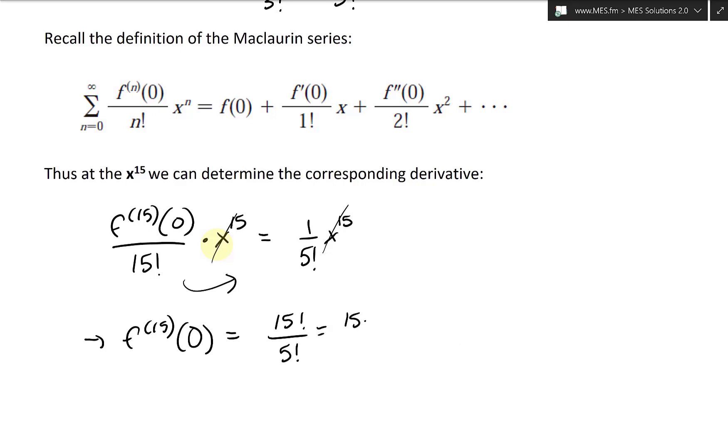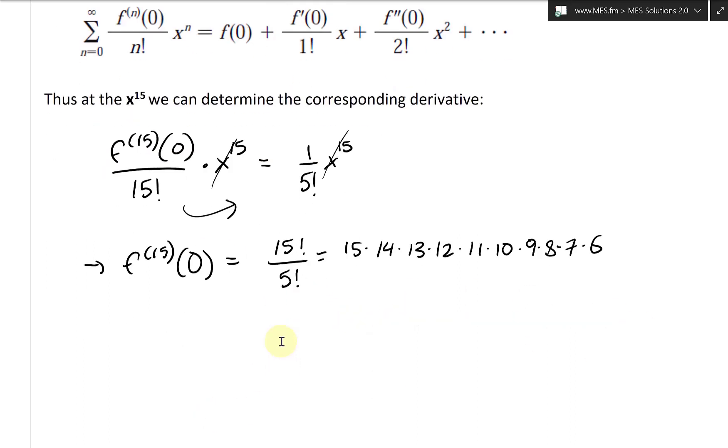And this just equals to 15 times 14 times 13 times 12 times 11 times 10 times 9 times 8 times 7 times 6 and then times 5 all the way, but you're dividing by 5 times 4 times 3 times 2, et cetera. And then if you plug this into the calculator, what you're going to get is 10,897,286,400. And that is the 15th derivative at x equals zero.